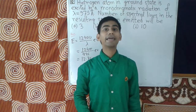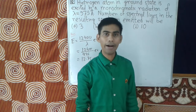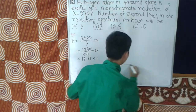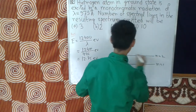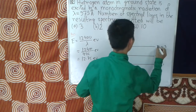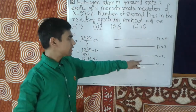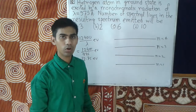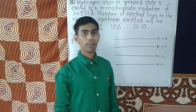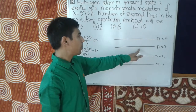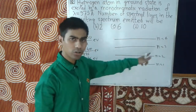Now we draw the energy level diagram of the hydrogen atom. Suppose this is the n equals 1 level, this is the n equals 2 level, this is the n equals 3 level, and this is the n equals 4 level, and so on. This is the energy level for the ground state, this for the first excited state, this for the second excited state, and this for the third excited state.